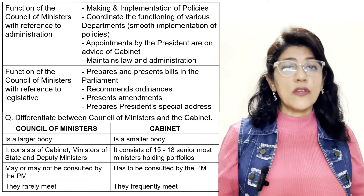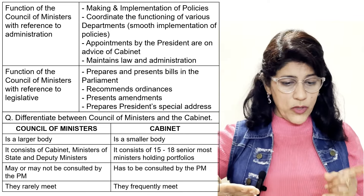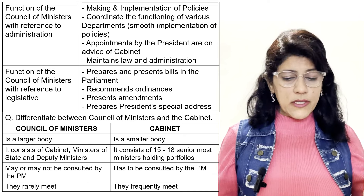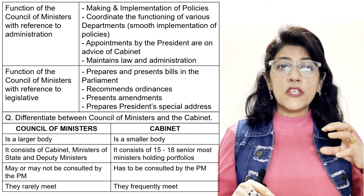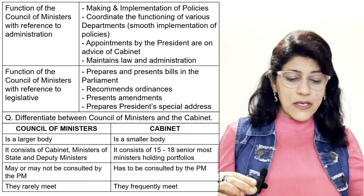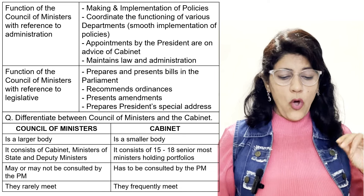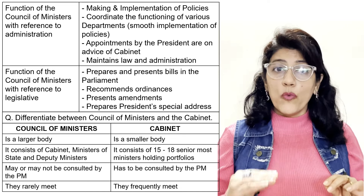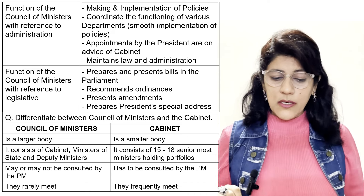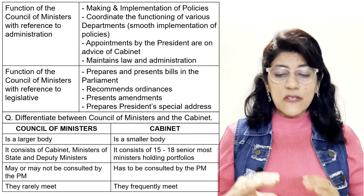Functions of the Council of Ministers with reference to administration: making and implementation of policies, coordinates the functioning of various departments for the smooth implementation of policies, appointments by the President are on the advice of the cabinet only, and maintains law and order. Functions with reference to legislative powers: prepares and presents bills in Parliament, recommends ordinances, presents amendments, and prepares the President's special address.